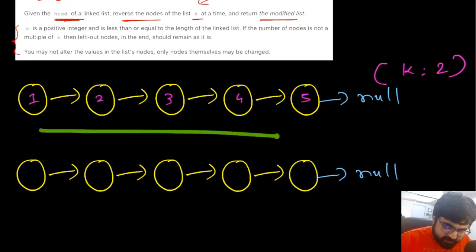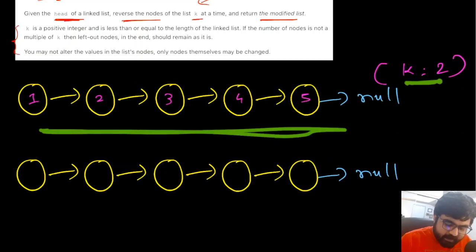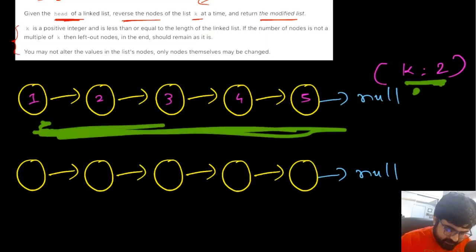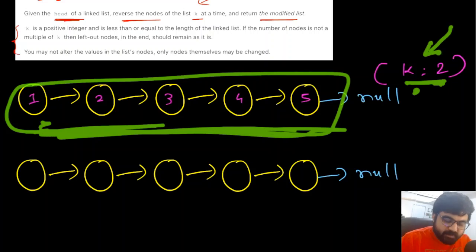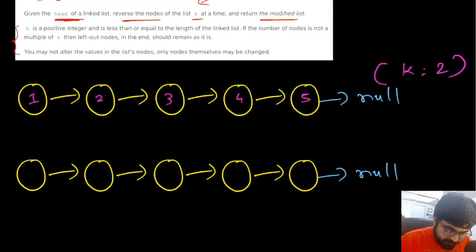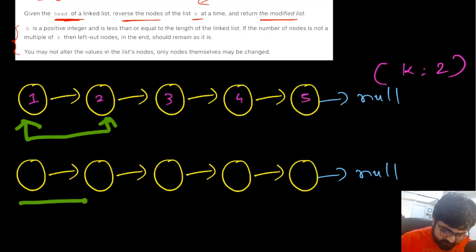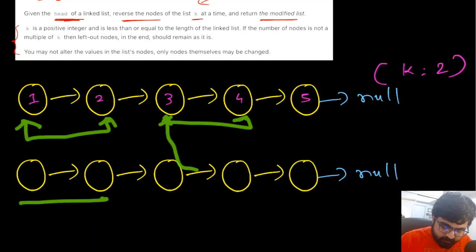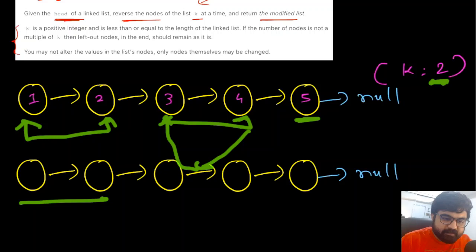Let's understand this with an example. We are given a linked list and the value K is equal to two. We need to reverse the nodes inside this linked list K at a time. So in this case two nodes are given, we are going to reverse two nodes and keep repeating the same process. First we reverse these two nodes and store the answer, then we reverse the next two nodes. Since this last one is only one node and K equals two, we are not going to change anything there.